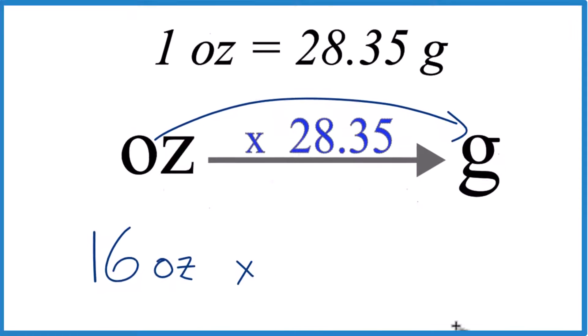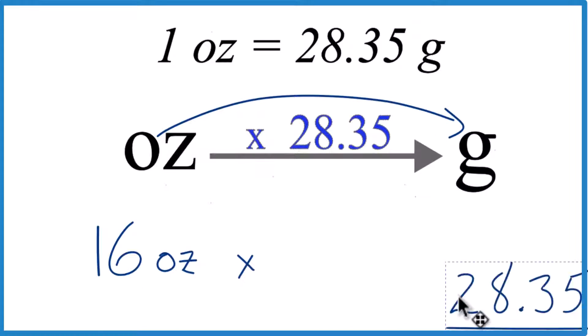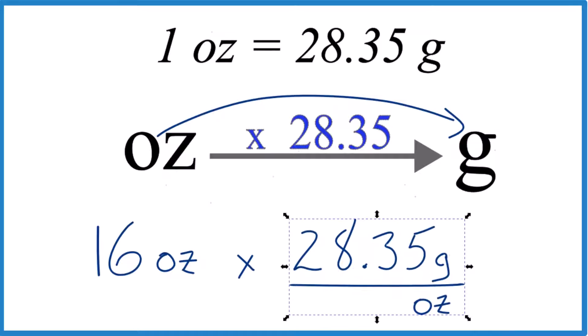So let's multiply our 16 ounces here by 28.35 and note that that's 28.35 grams per ounce. We have 28.35 grams in one ounce. That's our conversion factor.